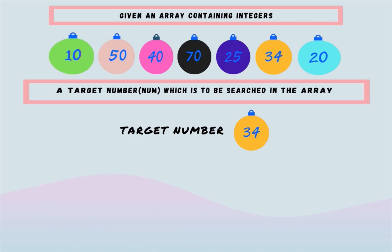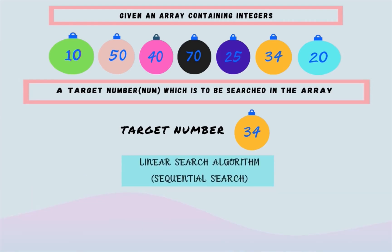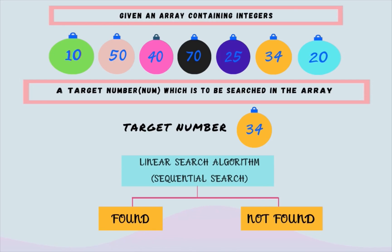For example, if we are given 34 as the target number, we have to return the position of 34 in the given array. We will use linear search algorithm, also known as sequential search, to find the target number. If we are able to find the element, we return its index; otherwise we return minus one.